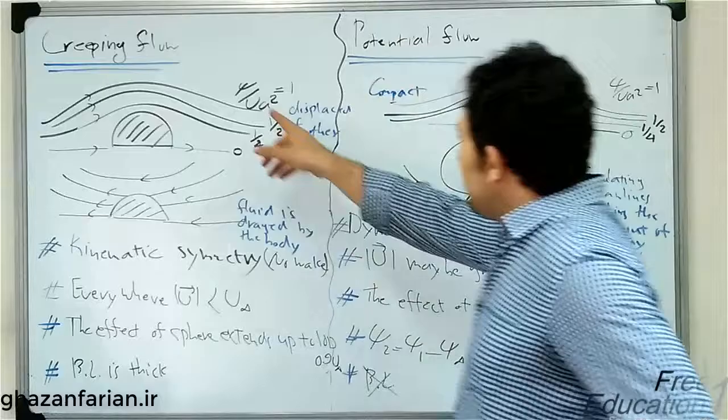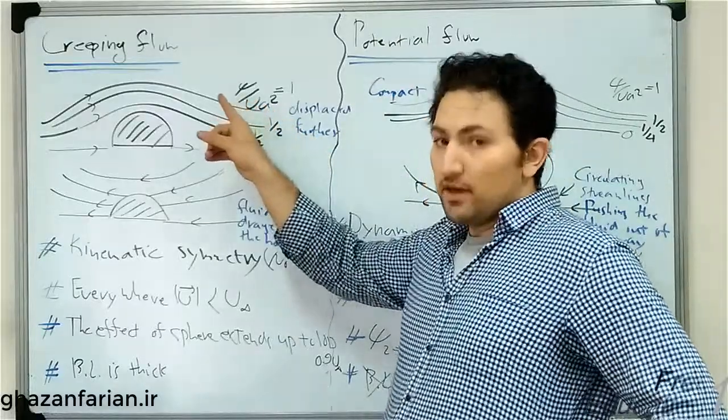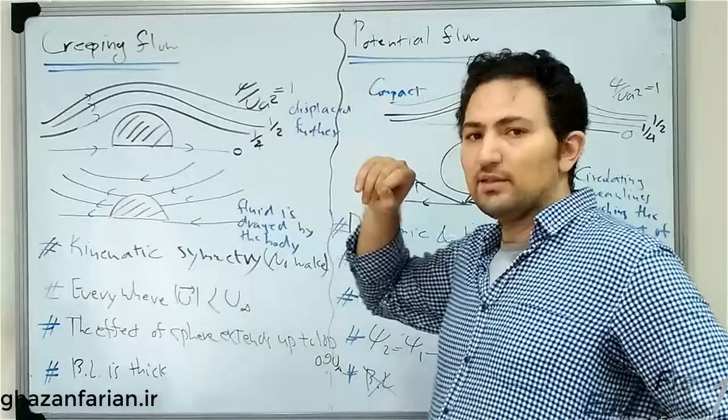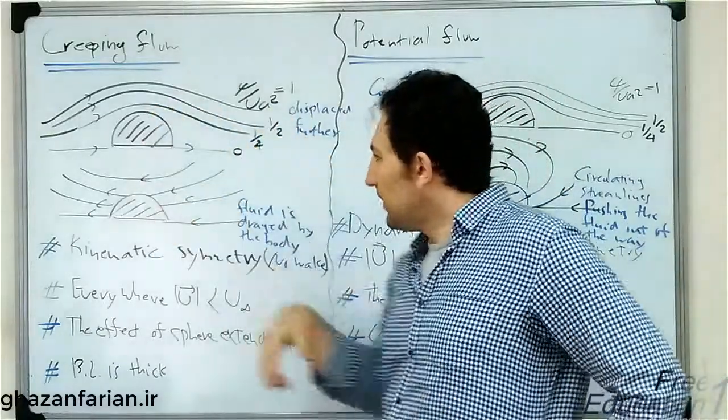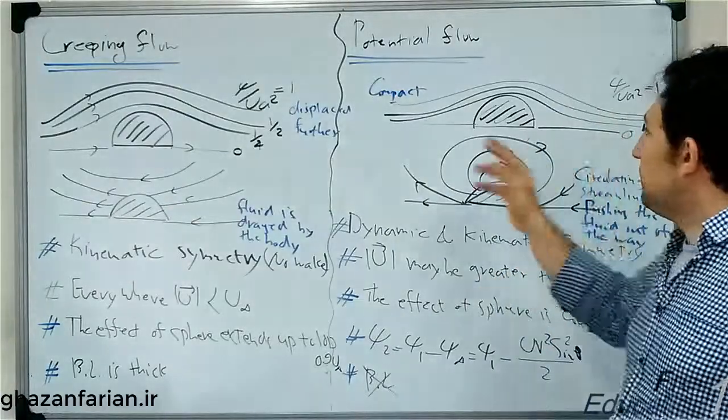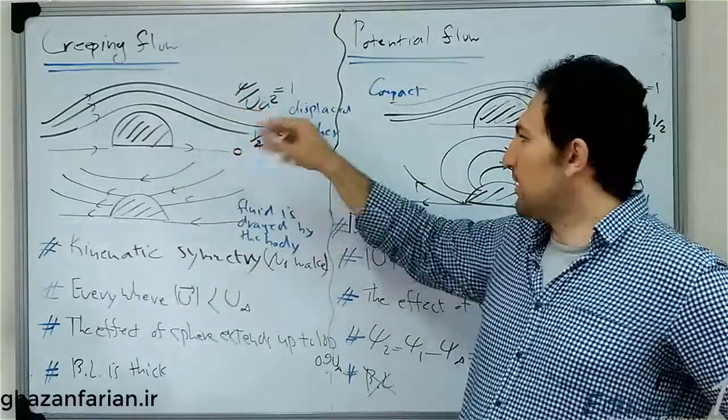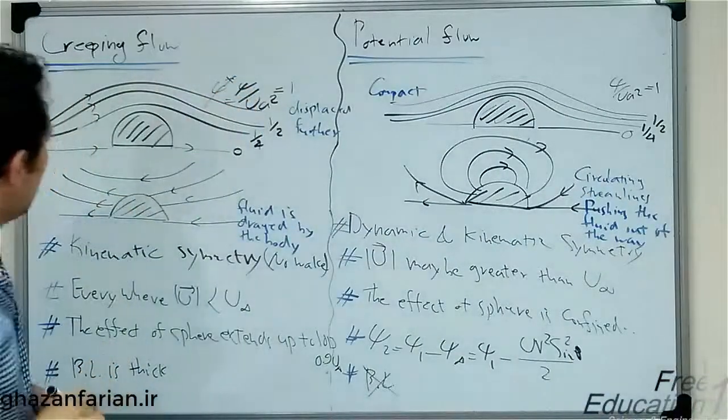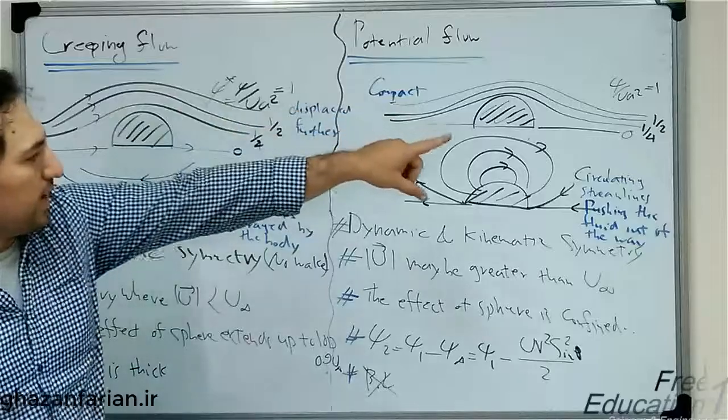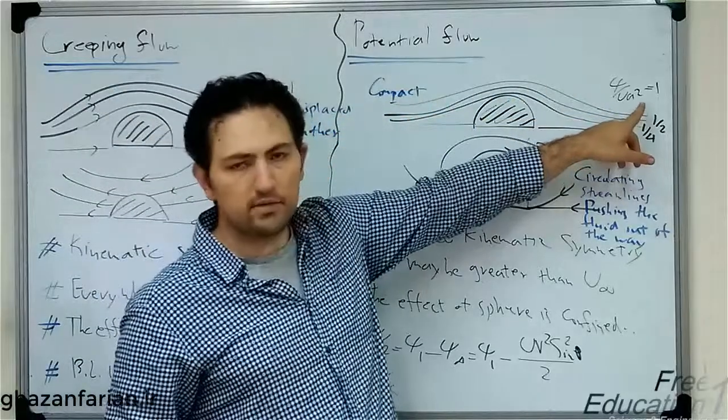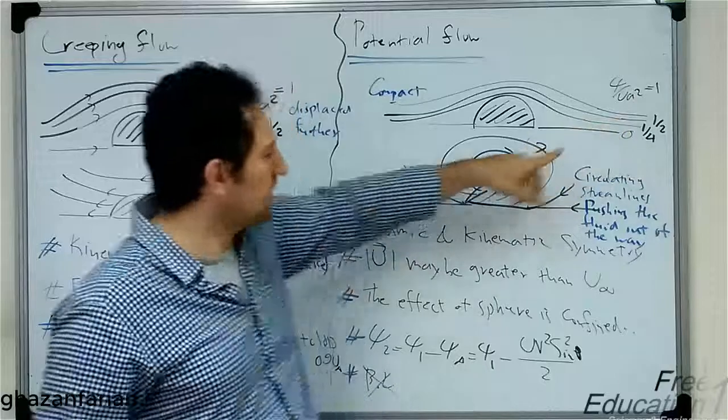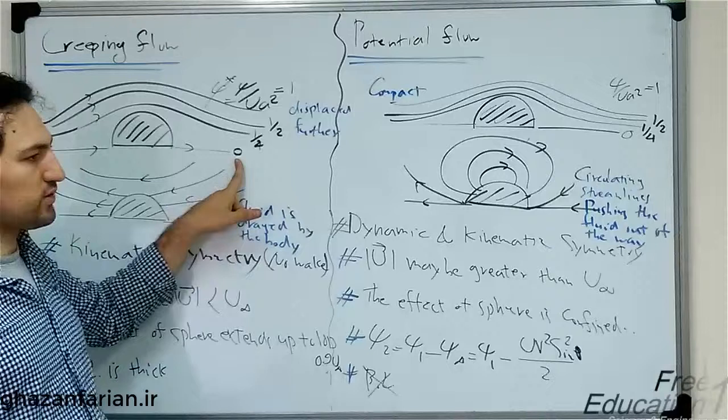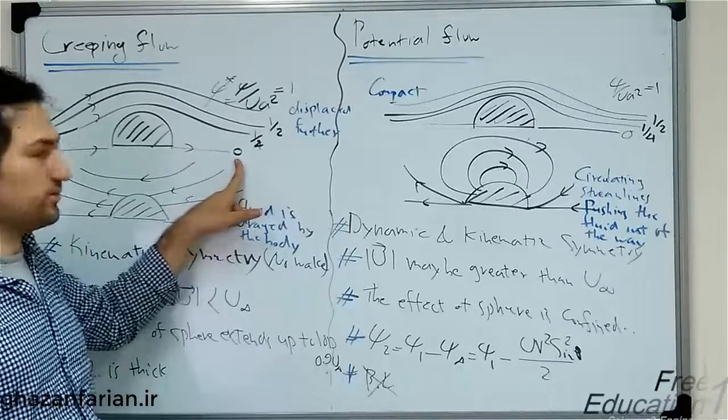The value of the dimensionless stream function, or psi, over u squared a, the radius of the sphere, is shown over streamlines. And you see we have psi star, for example, the dimensionless psi star equal to one. Again, we have psi star equal to one here. And three different stream functions. Zero is the stream function of the stagnation point streamline, which is horizontal in both cases.